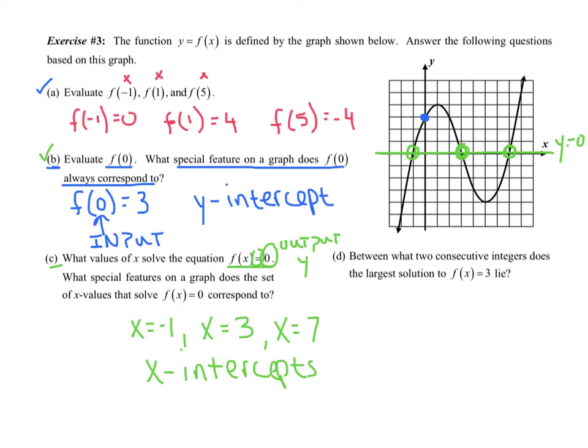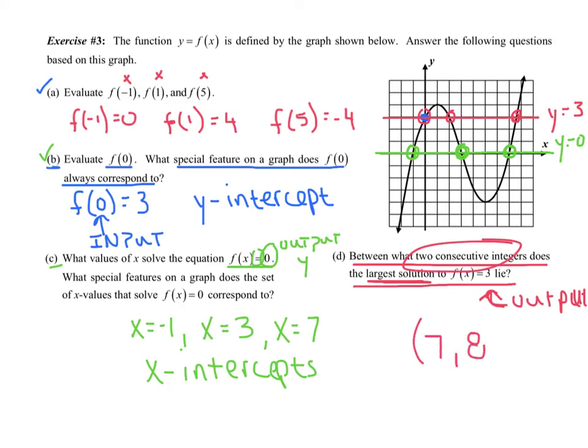And last but not least, between which two consecutive integers does the largest solution to f of x equals 3 lie? Again, the 3 is your output. Okay? Oh, my goodness gracious. My handwriting has really gone down the tubes. So what I'm going to do is I'm going to go up to y equals 3. I'm going to draw a horizontal line here at y equals 3. What you'll notice is there's three different solutions. They actually didn't want all three. They just wanted the largest one of those solutions. I would say the largest one is over here. It falls somewhere between 7 and 8. It looks like it's maybe like 7.6-ish. And so between which two consecutive integers, I would say somewhere between 7 and 8.